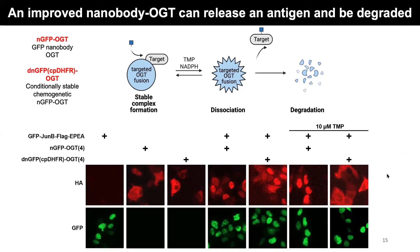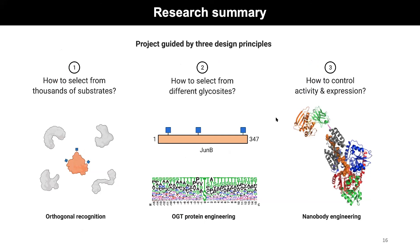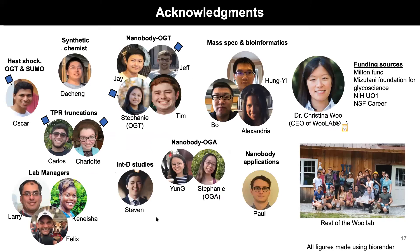That summarizes the three main principles from a high-level point of view: being able to select from thousands of different substrates, being able to select from different glycosites, and being able to control the activity and expression of this tool. I want to thank everybody who has worked with me throughout the years — primarily my O-GlcNAc team — as well as the funding sources that have supported this research, and of course Christina, for giving me the flexibility to work on this project. I'll take questions. Thank you.